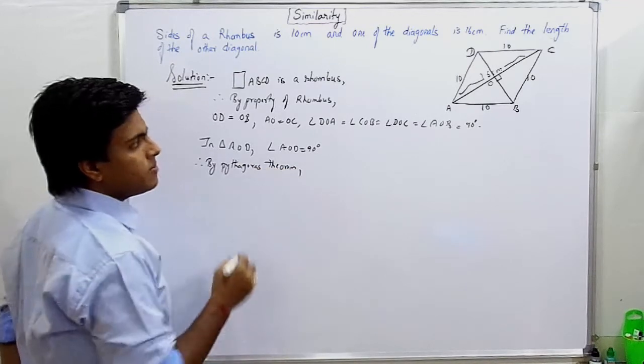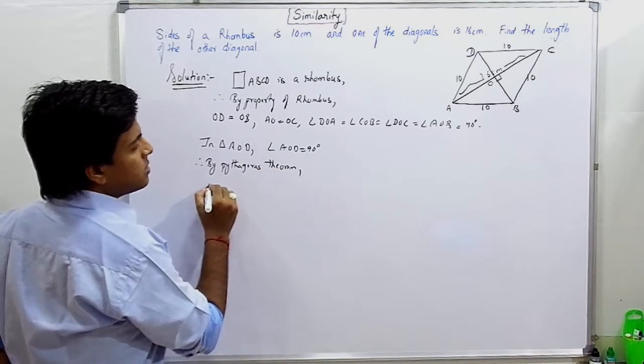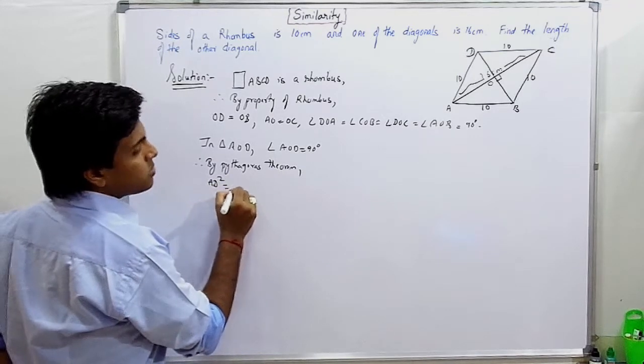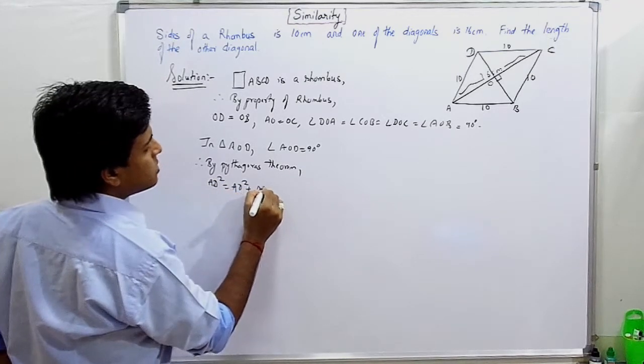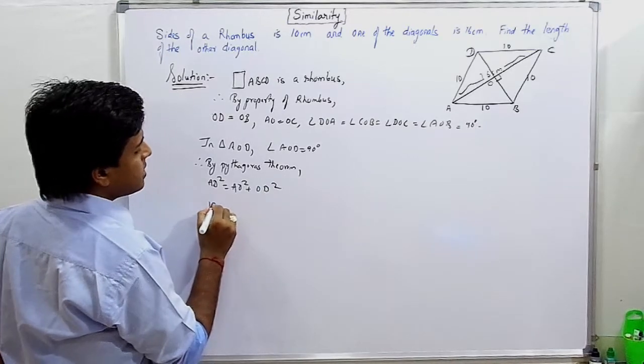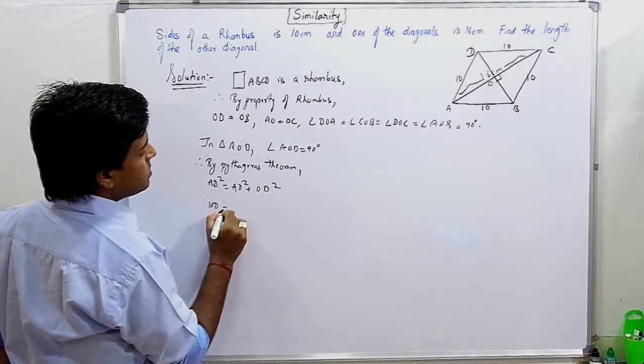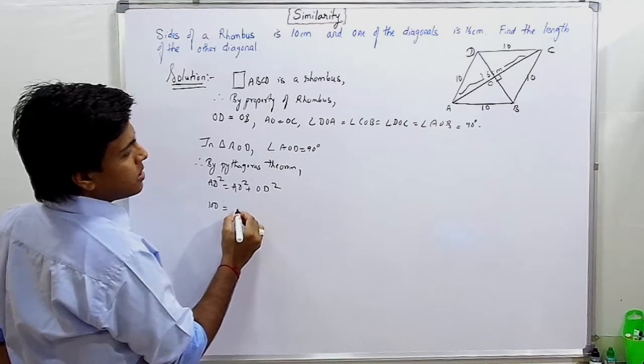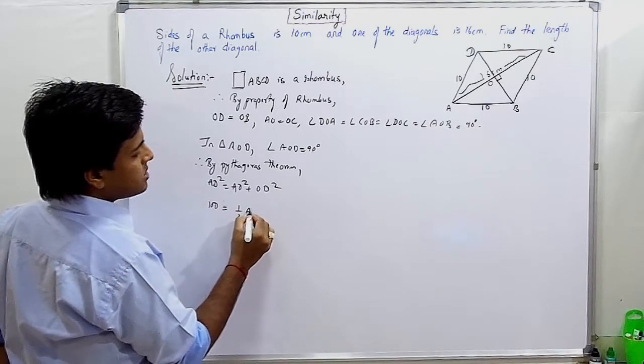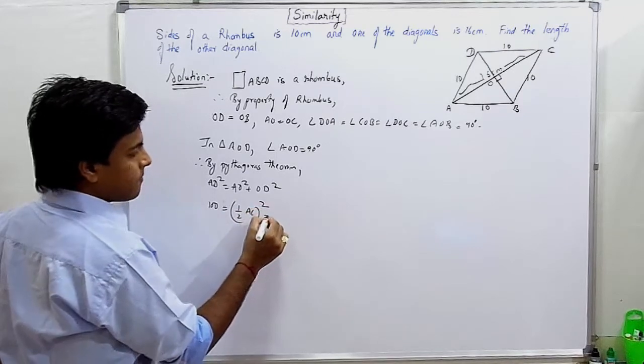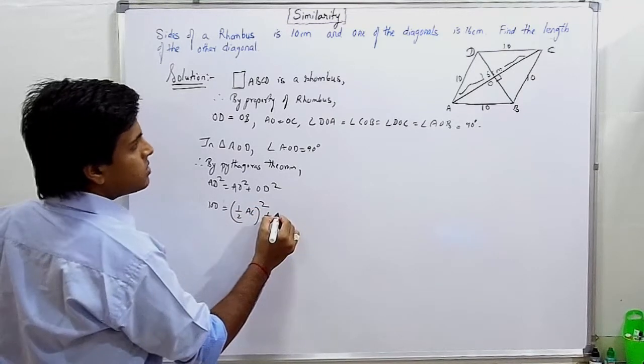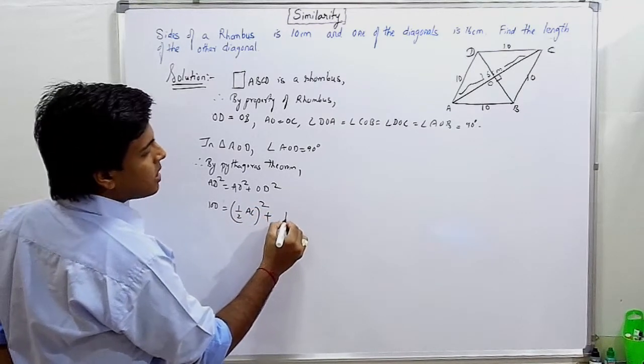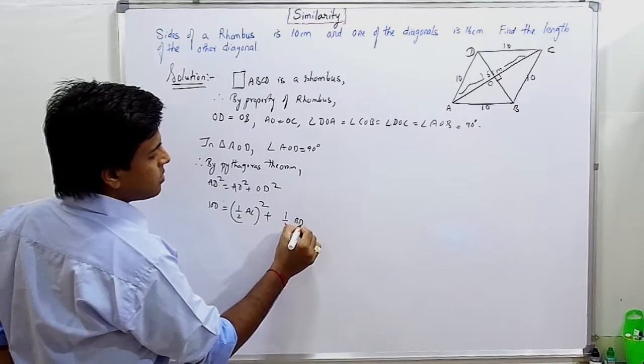AD squared equals AO squared plus OD squared. Here we have 100 equals 10 squared. What is AO? AO is half of AC, or its square. What is OD? OD is half of BD, or its square.